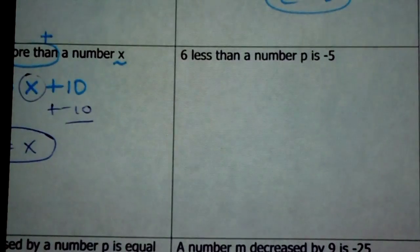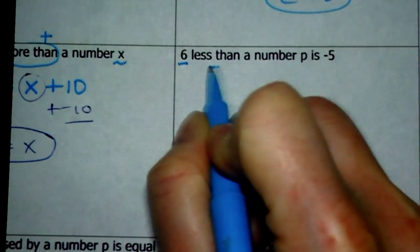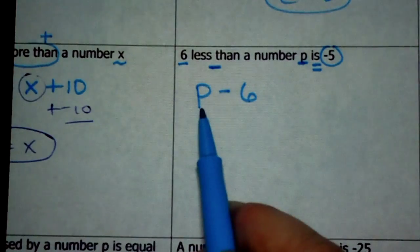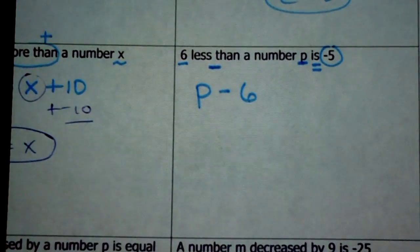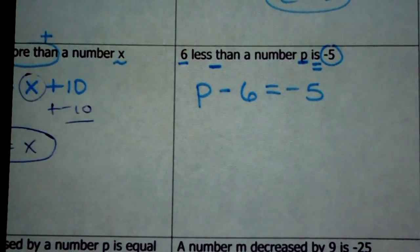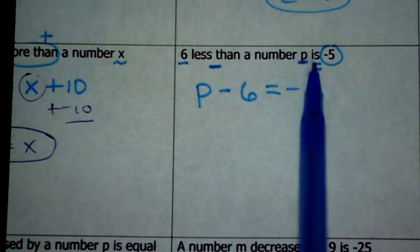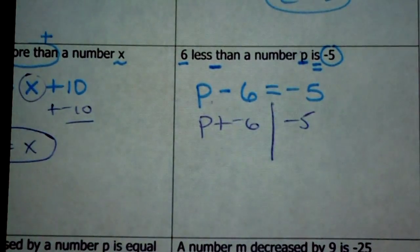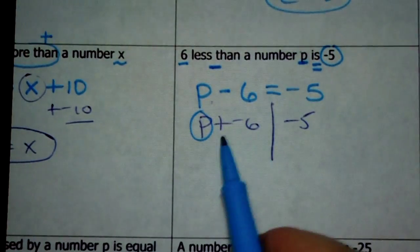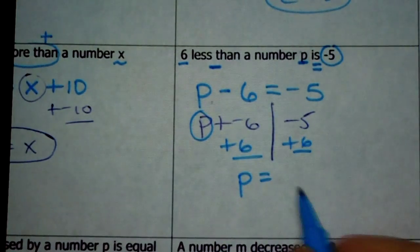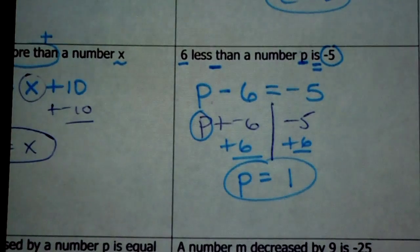Here are the words less than: 6 less than a number p is negative 5. Less than means subtraction. If I say 6 less than p, I start with p and have 6 less than that, so this means p minus 6. The order does matter — you can't put 6 minus p, it doesn't mean the same thing. So the equation is p minus 6 equals negative 5. Draw the line and change the sign: p plus negative 6 equals negative 5. Here's p — add the opposite of negative 6, which is 6, to both sides. Negative 5 plus 6 is positive 1. So p equals 1.